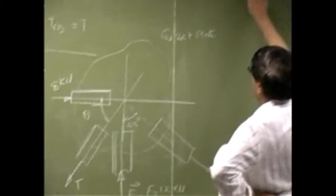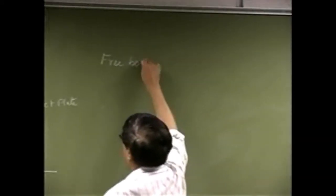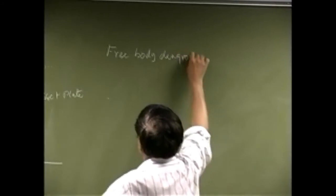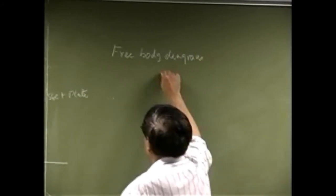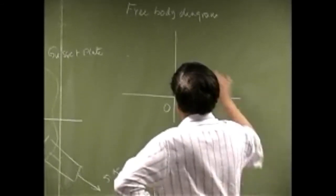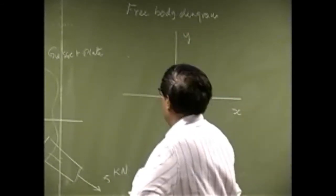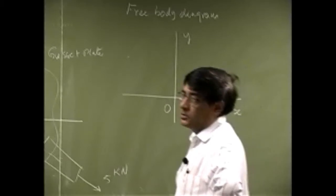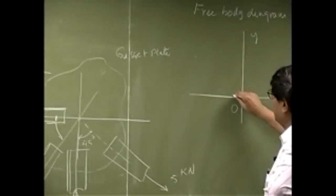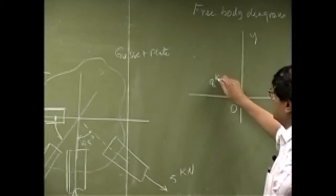another member here with the force F and another member here with force 5 kN. So first thing we are going to do is we will draw a free body diagram and let's say if you choose the axis X and Y then we can draw the force on this member and that's going to be 8 kN.